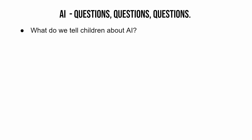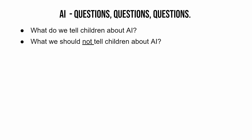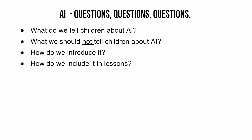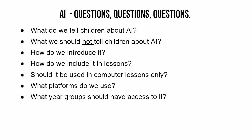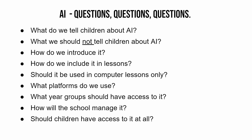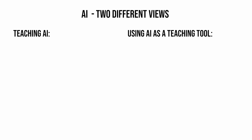AI has posed more questions than answers. From courses and reading I've done, questions include: what do we tell children about AI, what should we not tell them, how do we introduce it, how do we include it in lessons, should it be used in computer lessons only, what platforms do we use, what year group should have access to it, how will the school manage it, and should children have access to it at all?